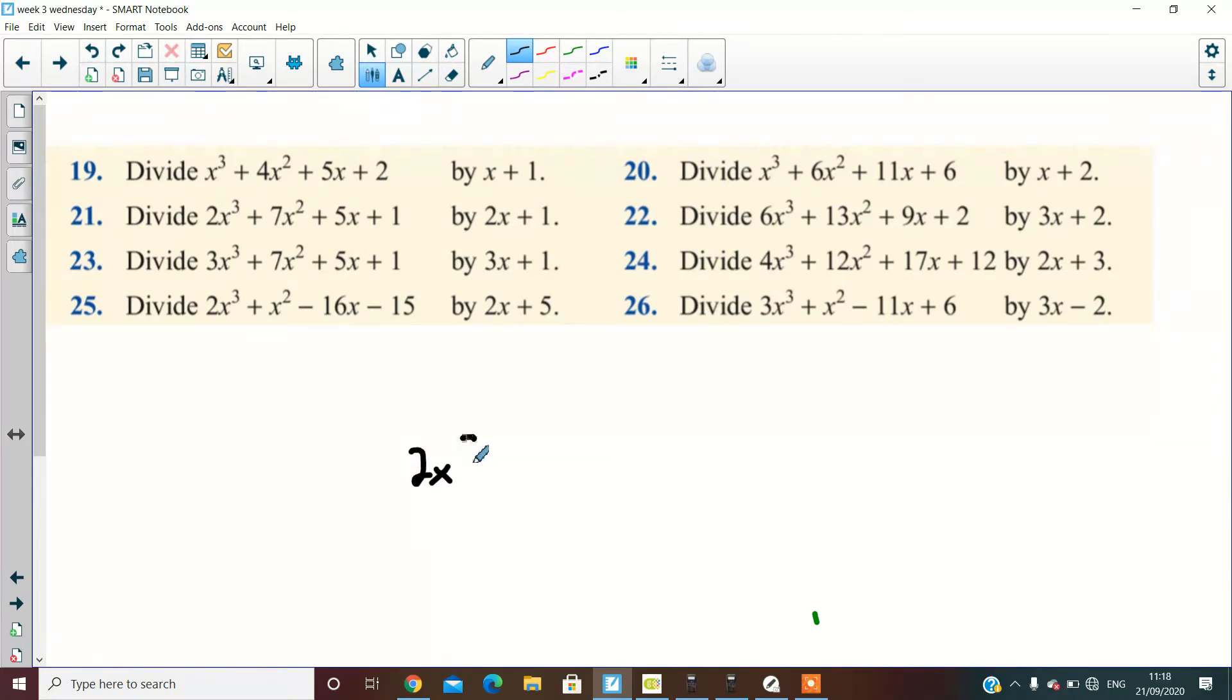We've got 2x³ plus 7x² plus 5x plus 1 and we're going to divide that by 2x plus 1. We highlight the first part. What is 2x³ divided by 2x? Anybody?